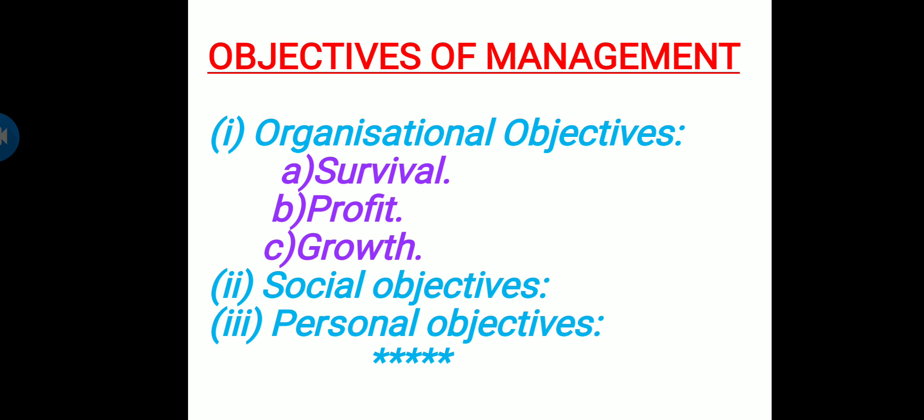First, organizational objectives. Management is responsible for setting and achieving objectives for the organization. Organizational objectives consider all areas — it is going to protect the interest of the stakeholders: shareholders, employees, customers, and the government. The main objective of the organization is to utilize its resources in an efficient and effective manner.